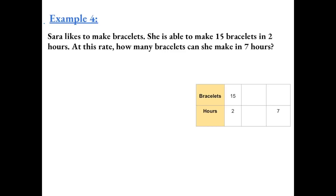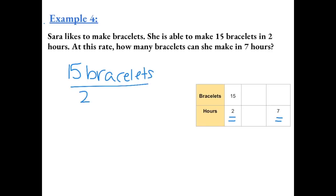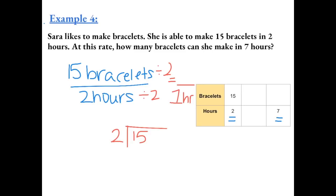Example 4. Sarah likes to make bracelets. She is able to make 15 bracelets in 2 hours. At this rate, how many bracelets can she make in 7 hours? Because there is no convenient number between 2 and 7, we find the unit rate. If she makes 15 bracelets in 2 hours, we divide by the denominator to find how many bracelets she makes in 1 hour. 15 divided by 2: 2 goes into 15 seven times, which equals 14, then we add a decimal and a 0 — 2 goes into 10 five times.